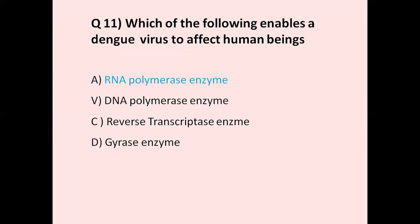Question number 11: Which of the following enables a dengue virus to affect human beings? Option A RNA polymerase enzyme, option B DNA polymerase enzyme, option C reverse transcriptase enzyme, option D gyrase enzyme. The correct answer is RNA polymerase enzyme.